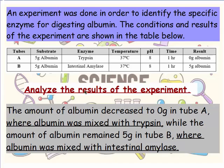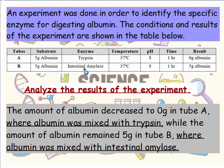The amount of albumin — the measured factor — decreased to 0 grams in tube A, where albumin was mixed with trypsin. While the amount of albumin remained 5 grams in tube B, where albumin was mixed with intestinal amylase. To conclude: the enzyme specific for albumin is trypsin, because albumin was digested and transformed by trypsin but was not transformed by intestinal amylase. Thank you for your attention and goodbye.